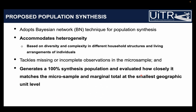In this research, we adopted a Bayesian network technique to generate population synthesis. One unique contribution is that we accommodated heterogeneity — meaning we don't have one single BN structure representing the whole population. Rather, our assumption is that different BN structures might represent certain groups of the population. For example, the BN structure representing variable interdependencies for a single-person household could be different from households with children. We built BN structures capturing that heterogeneity, generated a population pool, and evaluated how closely it matches the actual population.